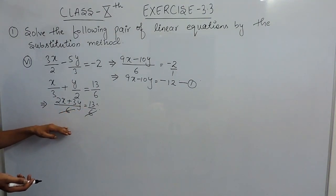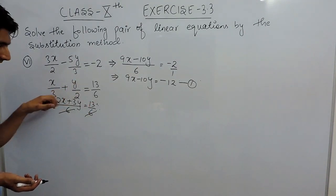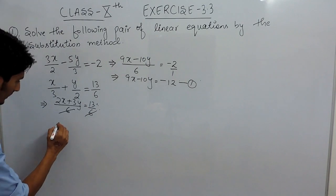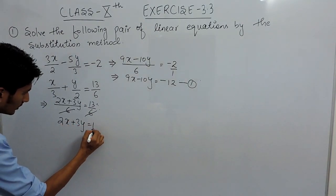that can be cancelled out. Same case with the numerator. If the numerators are same, that can also be cancelled out. Now we have got another equation as 2x plus 3y is equal to 13.